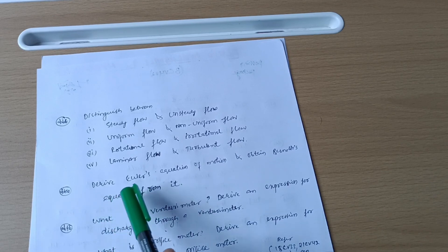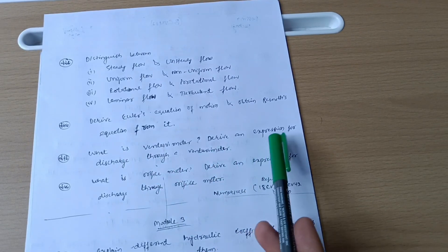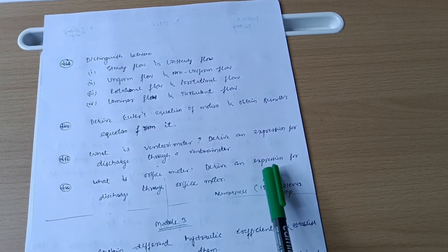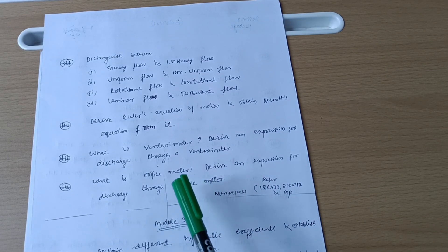Next is derive Euler's equation of motion and obtain Bernoulli's equation from it. This is also a super important question. What is venturimeter and derive an expression for discharge through a venturimeter, and what is orifice meter, derive an expression for discharge through orifice meter.